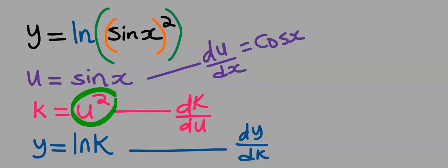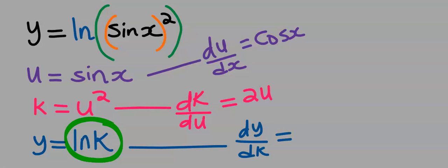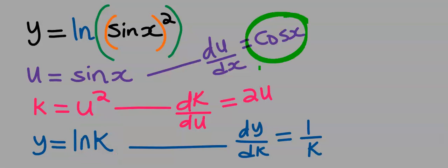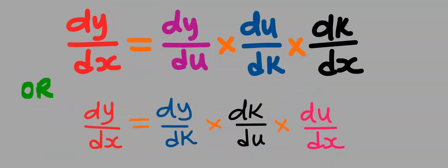Next, differentiate sin(x) and you are going to get cos(x). Next, differentiate u² and you are going to have 2u. Next, differentiate the natural log of k — when you differentiate the natural log of x you get 1/x, so here you are going to get 1/k. Next we are going to multiply the 3 results, replacing back our k and u according to the chain rule formula with double inner functions.